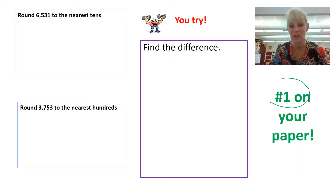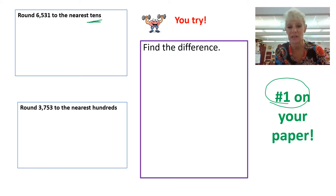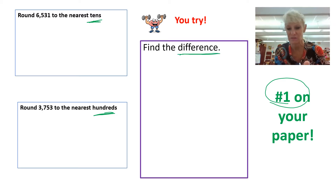All right, this is number one on your paper — this is where you're going to start recording. In the first box, round to the nearest tens. The second box, round to the nearest hundreds. Then find the difference. Pause this video, write all those numbers down and record it on your sheet of paper, and then you can press play again.